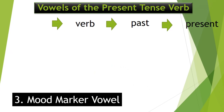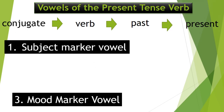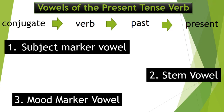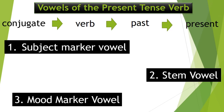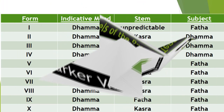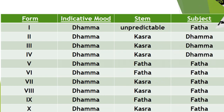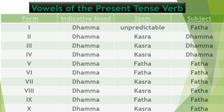There are three important vowels to note when conjugating any Arabic verb from past tense to present tense: 1) The subject marker vowel, which is the first vowel of the verb. 2) The stem vowel, which goes on the second radical or consonant of the root. 3) The mood marker vowel, which is the last vowel of the verb.